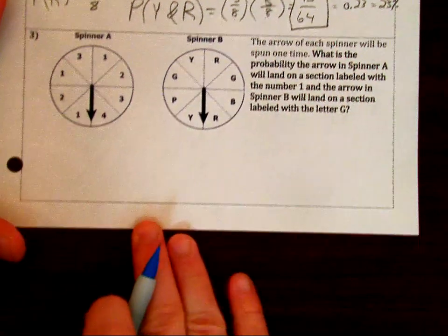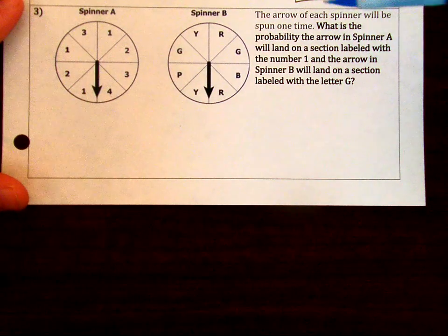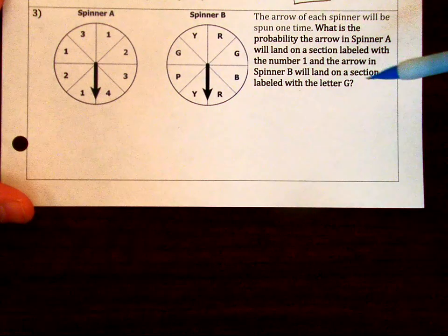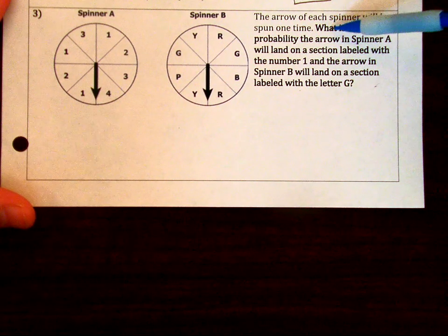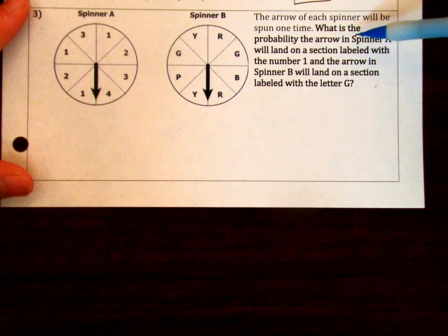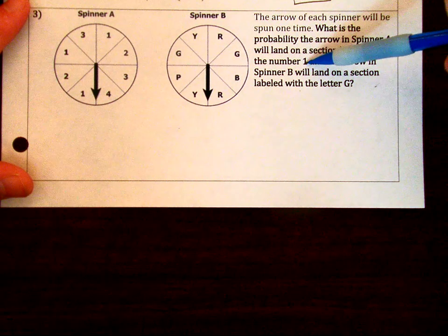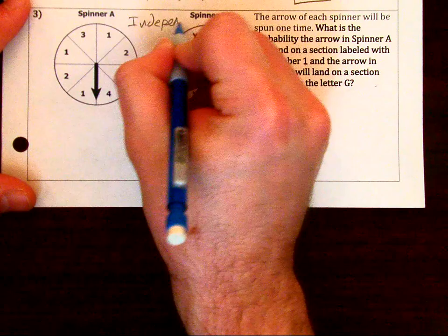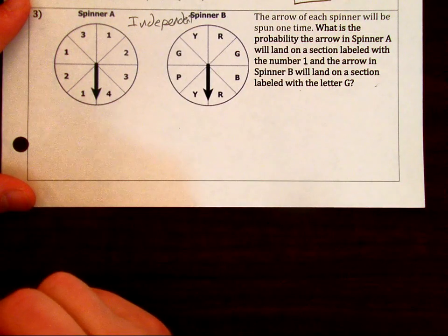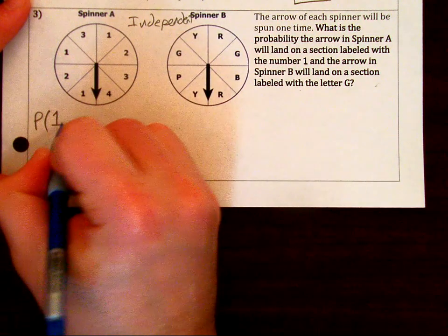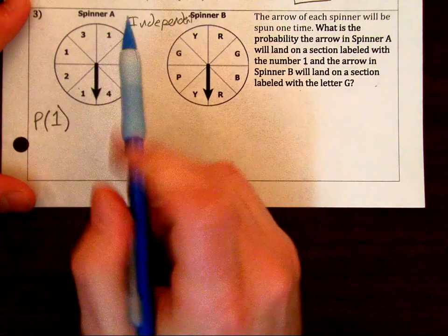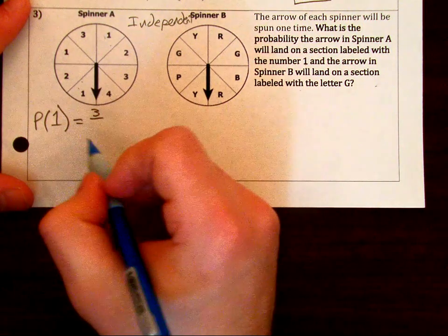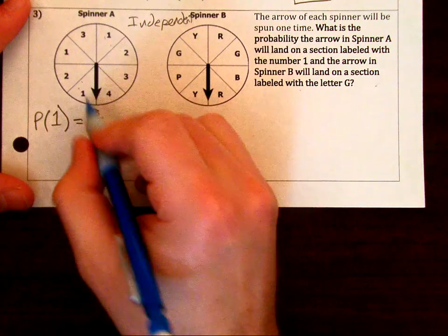For the third one, it says the arrow of each spinner will be spun one time. This is just kind of going back to you're doing one event at a time, two together. What is the probability the arrow will spin on spinner A and land on a section labeled with the number one. These are not going to affect each other, so they are independent. How many ones are there on this spinner? We have three. So our numerator is three. We count the number of events that we're looking for out of the total number of possible. The total number of spaces is eight, so three over eight.